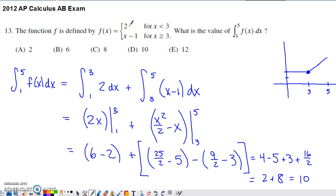We've got a function value of 2 for values that are smaller than 3, and then we've got a function value of x minus 1 for any value of x 3 or above.